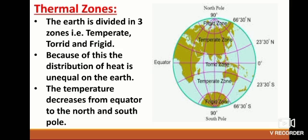See, there are the three zones. On the top, both places, north and south, there is the frigid zone. Afterwards, temperate zone. And near the equator is the torrid zone.